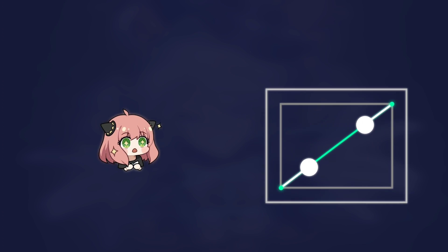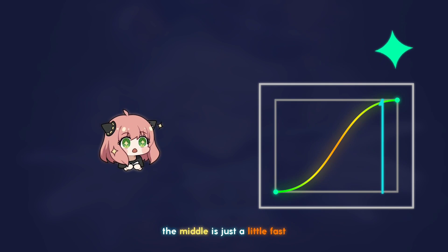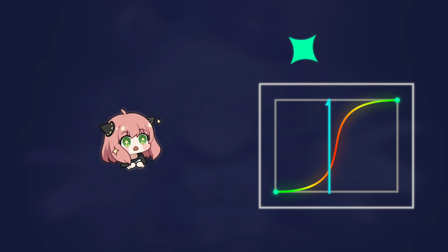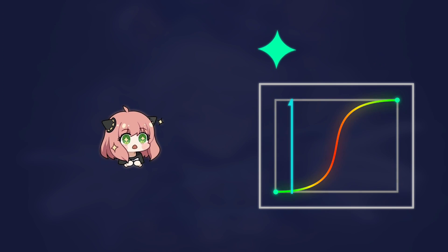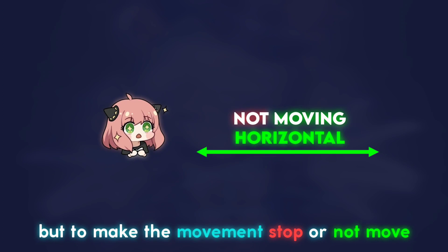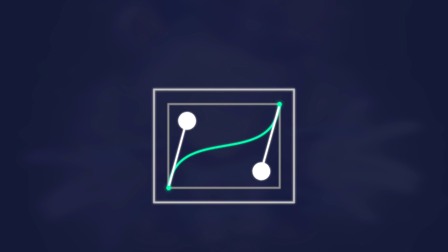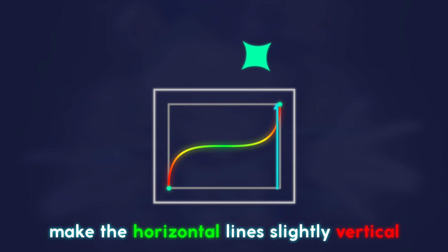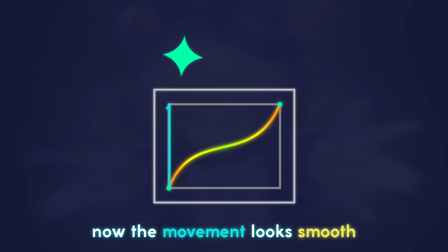The middle is just a little fast, which makes the movement look smooth. The more vertical, the faster. Actually, horizontal is not to slow down, but to make the movement stop or not move. In a horizontal position, there is no movement. With a vertical direction, it will move. To make the middle smoother, make the horizontal line slightly vertical — now the movement looks smooth.